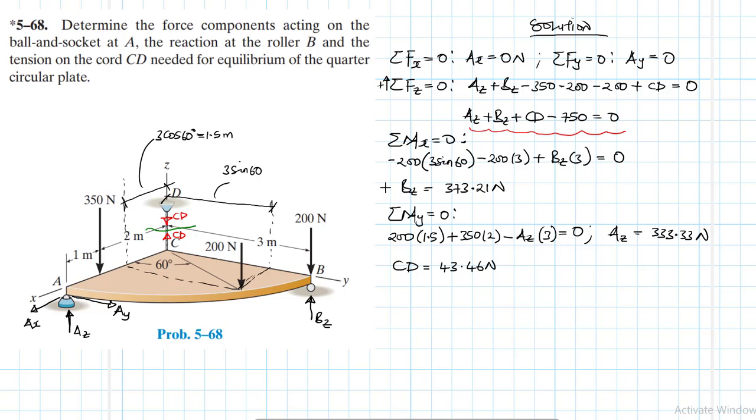So let me just write down the summary of our resolutions since they are scattered in all directions. So we have AX equal to 0 newtons. We have AY equal to 0 newtons. We have AZ equal to 333.33 newtons, and then we have BZ equal to 373.21 newtons, and then we have CD which is the tension in the cord CD which is equal to 43.46 newtons. So this is basically a summary of the solution for this particular problem.